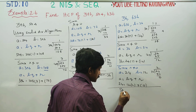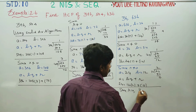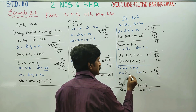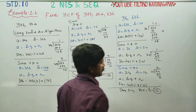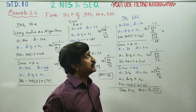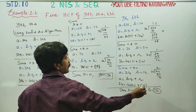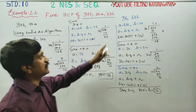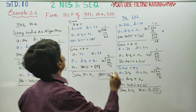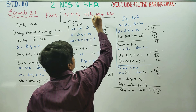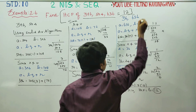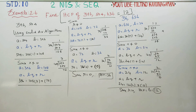Since remainder is equal to 0, HCF is equal to B, which is 12. The HCF of 396, 504, and 636 is 12. Thank you.